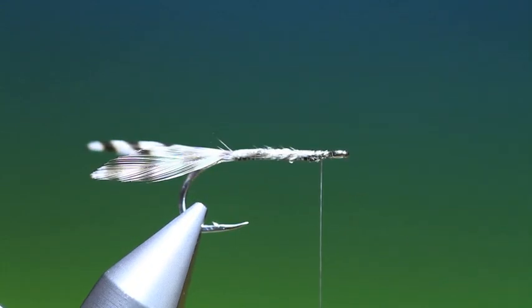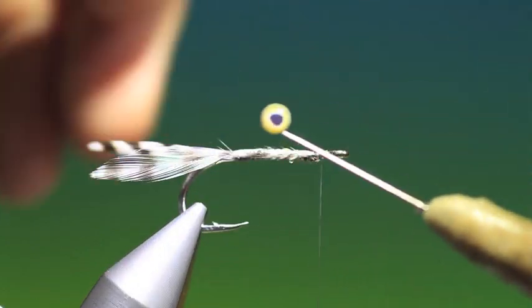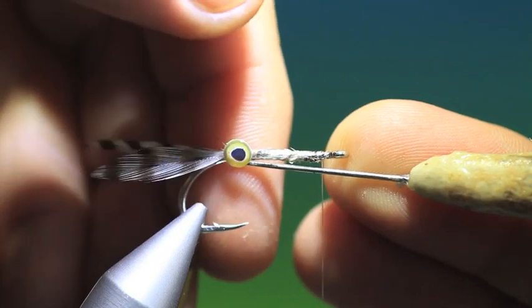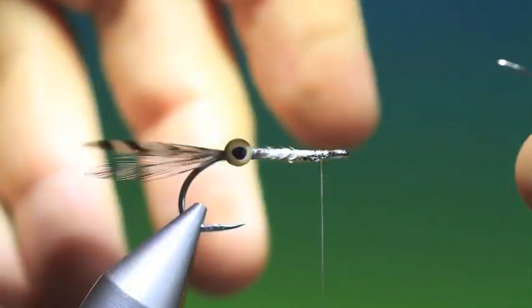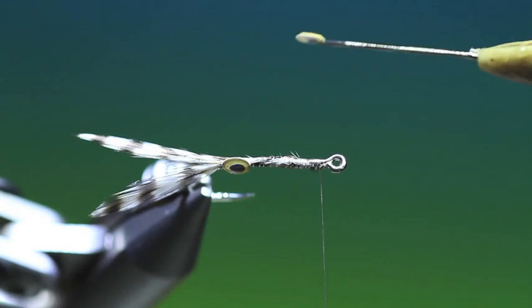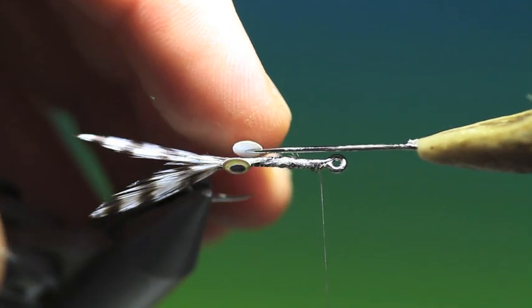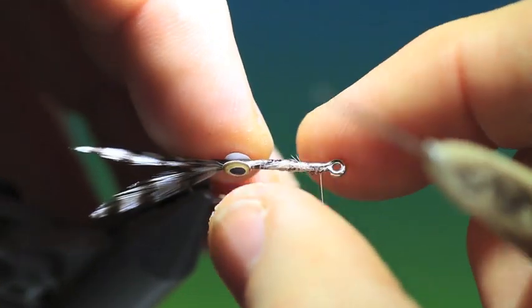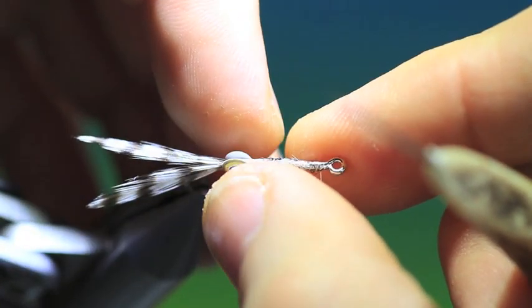So what we need now is a dubbing needle and some eyes. These eyes we place on each side. Size and color is your choice. And I like these 3D eyes.